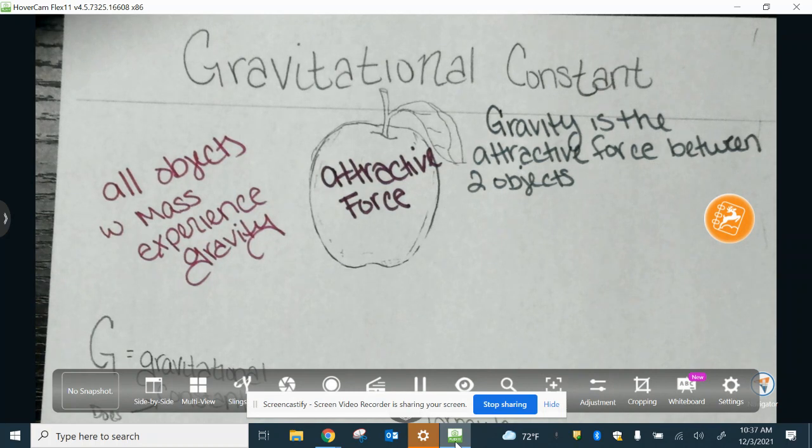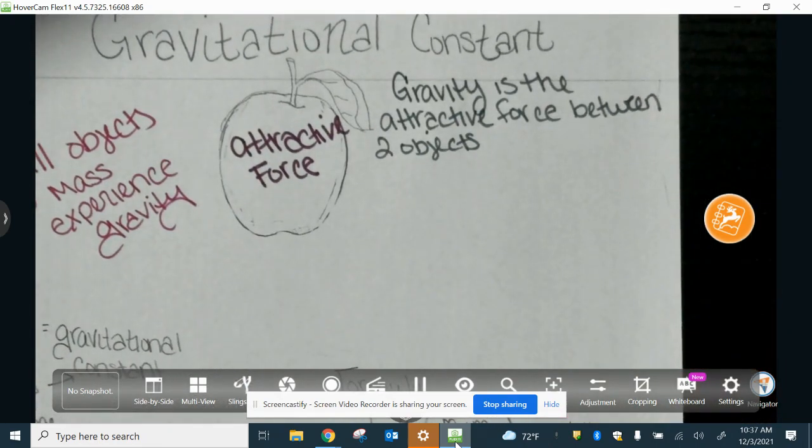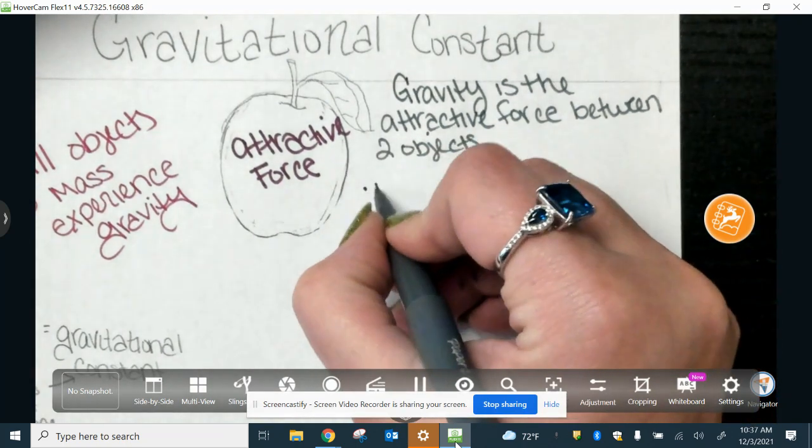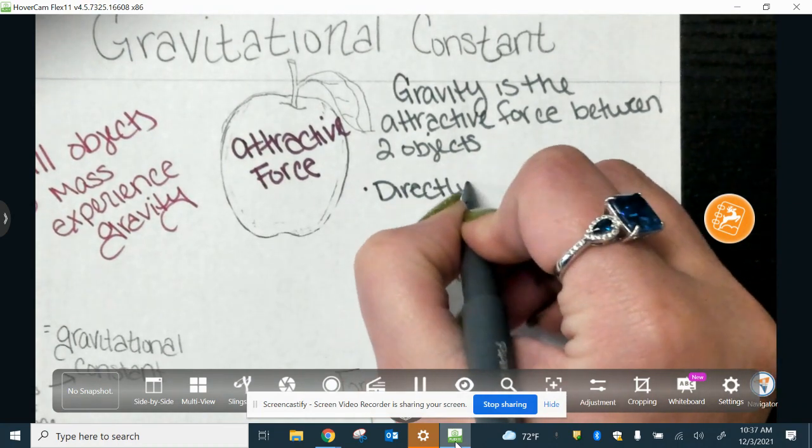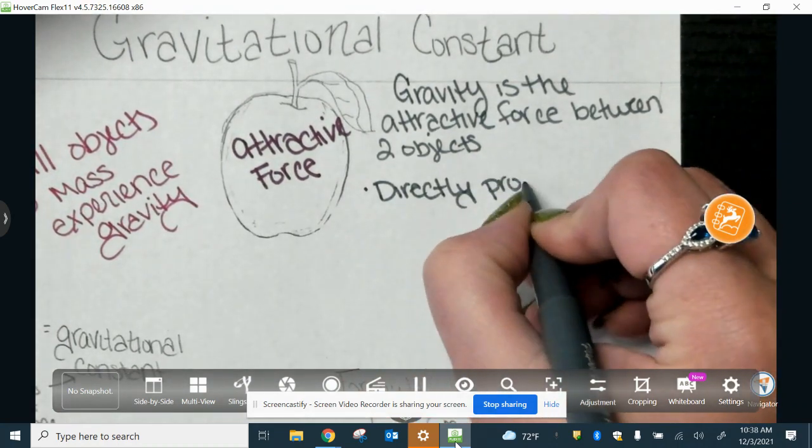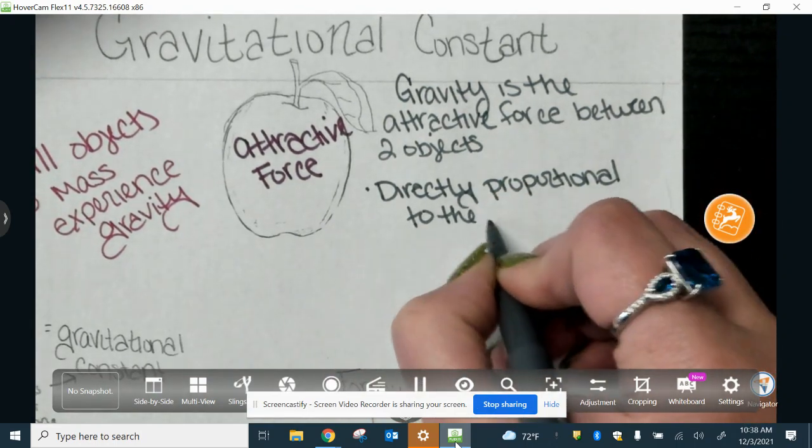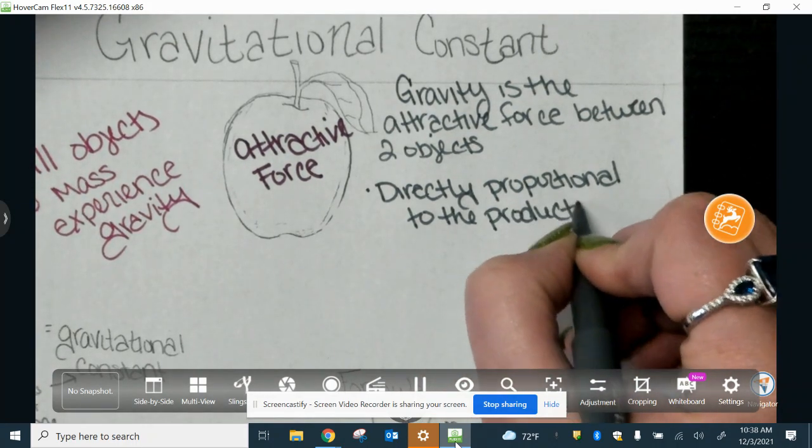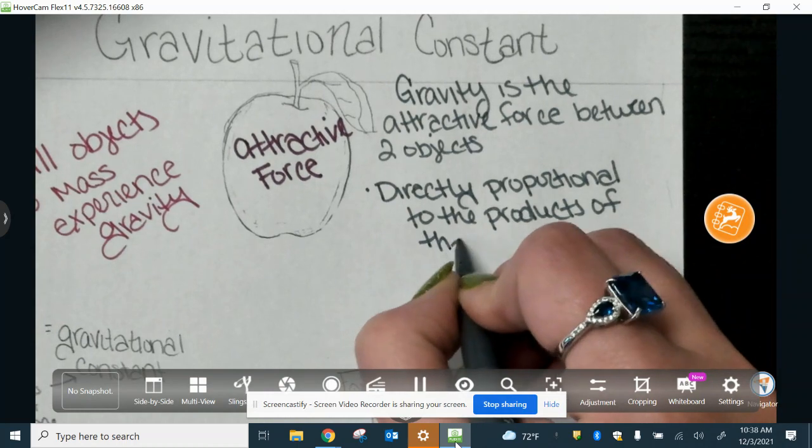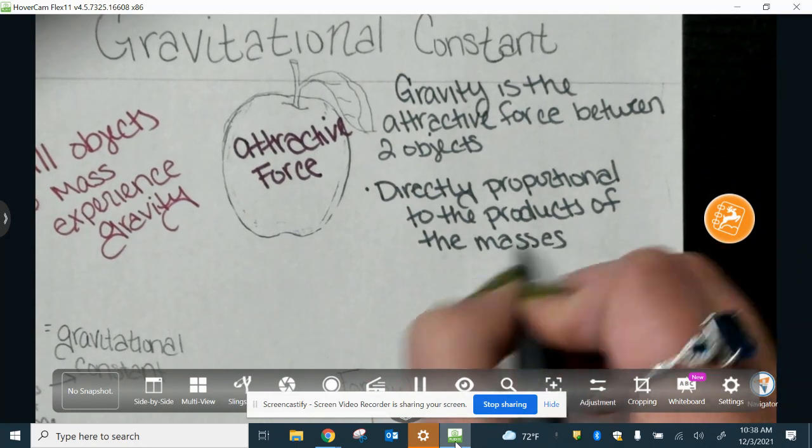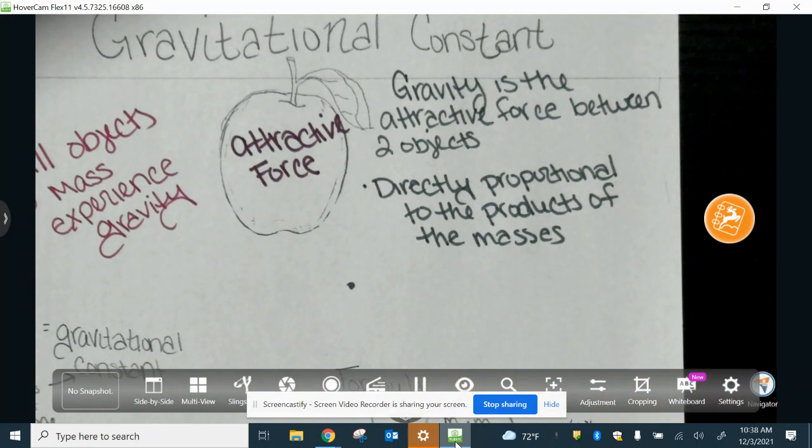So gravity is the attractive force between two objects. Now, I want you to write these next two bullet points, and then we're going to talk about them. It is directly proportional to the products of the masses, and it is inversely proportional to the distance between them.